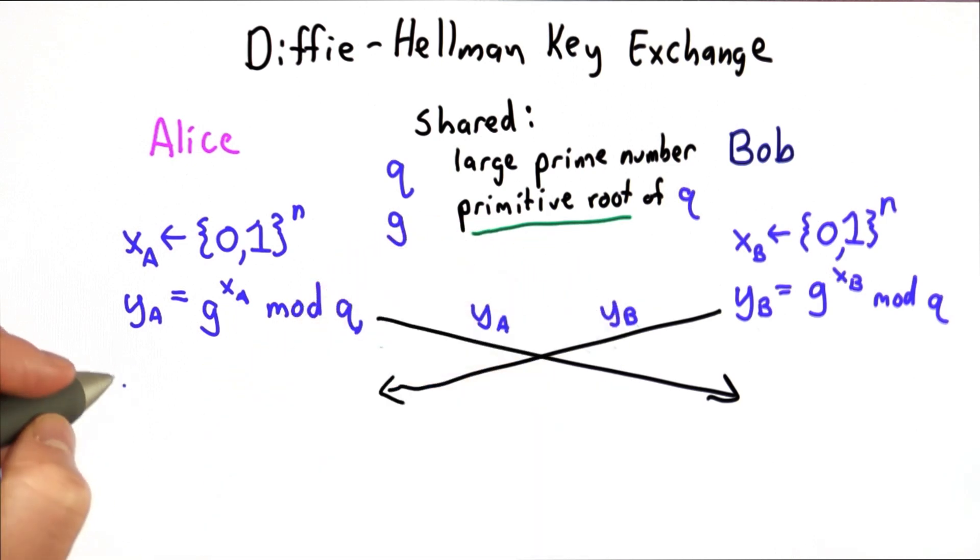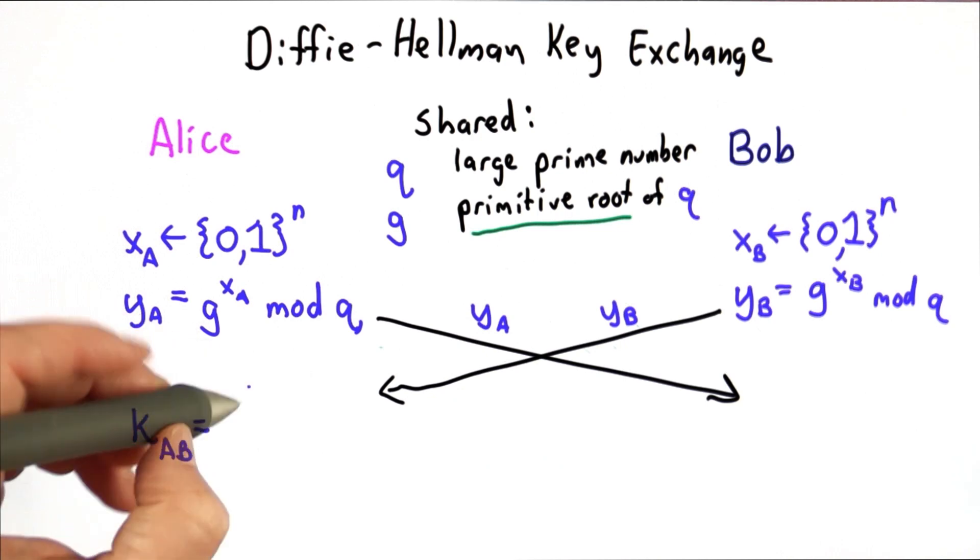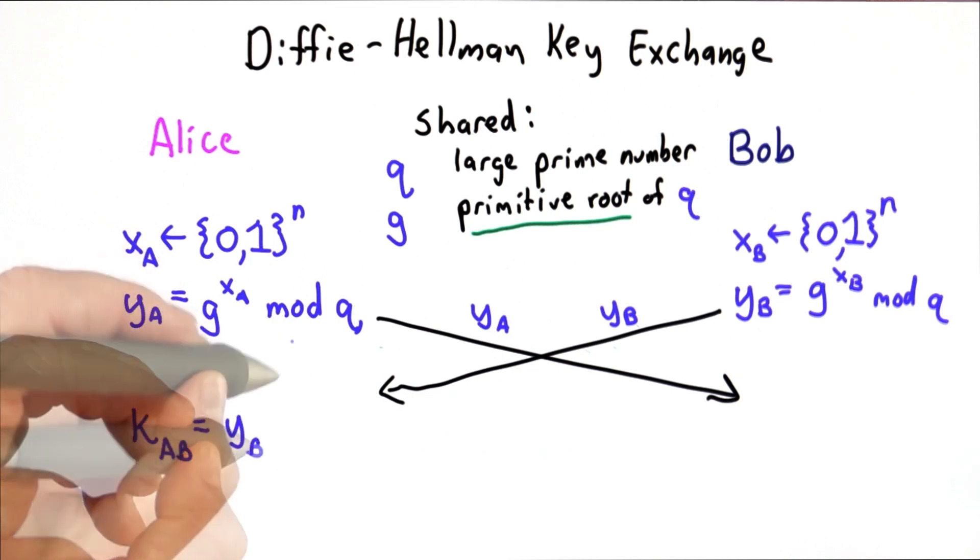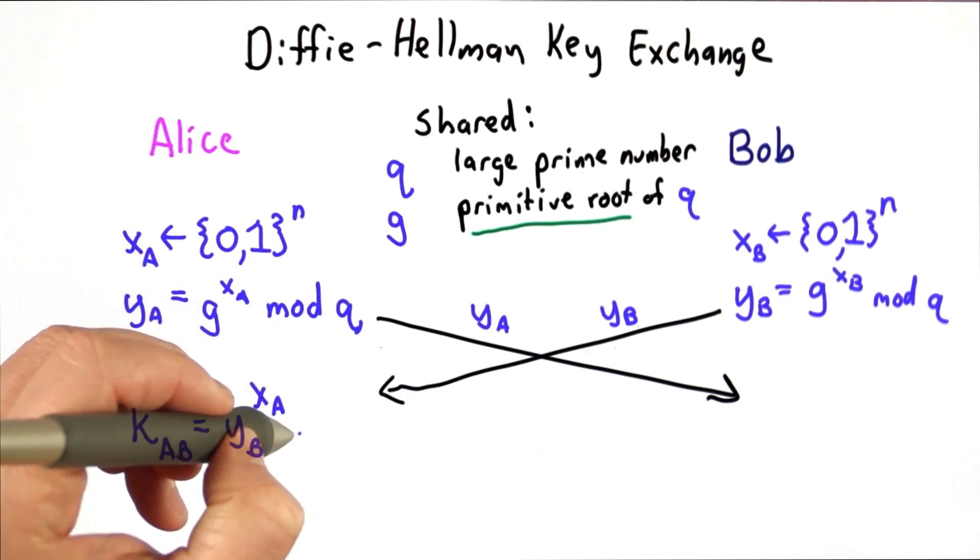And then Alice will compute a key that will be shared between Alice and Bob, and she'll compute that by raising the yb value that she received from Bob to the xa power, and do that all modulo q.